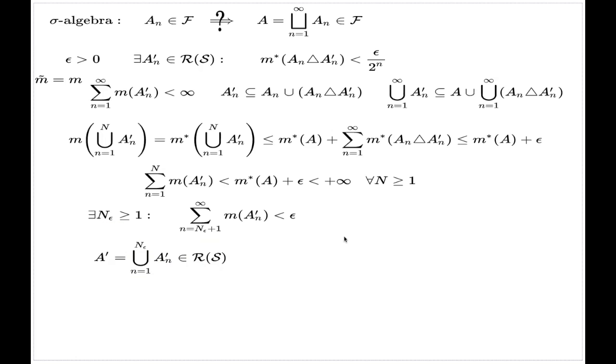And now I claim the following set relation. The symmetric set difference of my A and this specifically crafted A' will be a subset of union of all symmetric differences, complete union, countable union of A_n with A_n', but not all of them, but the tail of this one. Again, I'll leave it for you to check this relation. You have to take an element from the left-hand side and see that under all possibilities it will end up in the right-hand side.